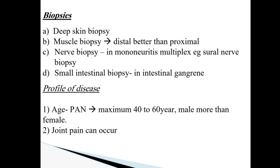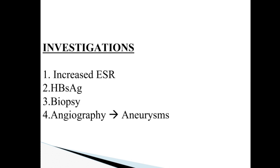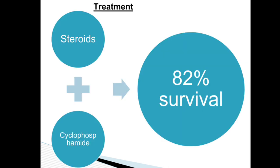Maximum patients are 40–60 years and males are more affected than females. Joint pains, amyotrophy of muscles, neuropathy, skin involvement, and cardiac MI can occur. Renal involvement occurs due to aneurysms in arteries — however, no glomerulonephritis. GIT involvement is most severe and can occur in one-third of patients, especially hepatitis B positive ones. Orchitis can occur due to testicular involvement. Lung is usually spared, unlike MPA and Wegener's. Investigations: increased ESR, HBsAg, biopsy, and angiography to look for aneurysms. With combined steroids and cyclophosphamide, survival is 82%.